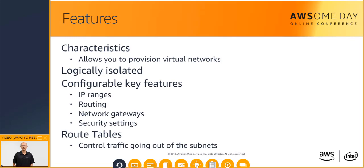Amazon VPC builds upon the AWS Global Infrastructure of regions and Availability Zones, allowing you to easily take advantage of the high availability provided by the AWS Cloud. It also allows you to provision virtual networks hosted on the AWS Cloud dedicated to your AWS account. When you create a VPC, it will span across all the AZs of a single region. Each AWS account can create multiple VPCs that can be used to segregate environments.